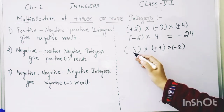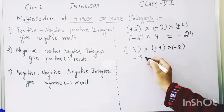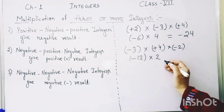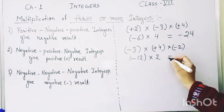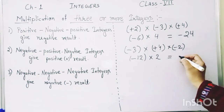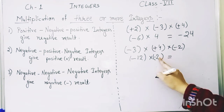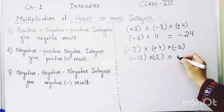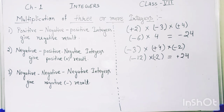Solving: minus three and plus four gives us minus 12, and it is then multiplied by minus two. Solving these two gives us plus 24.